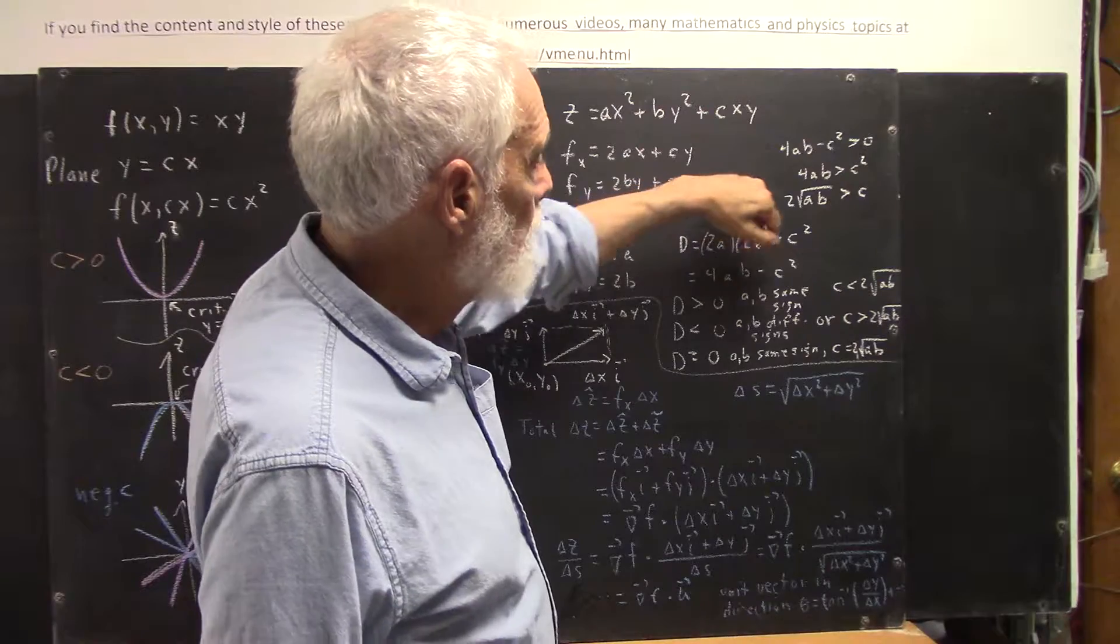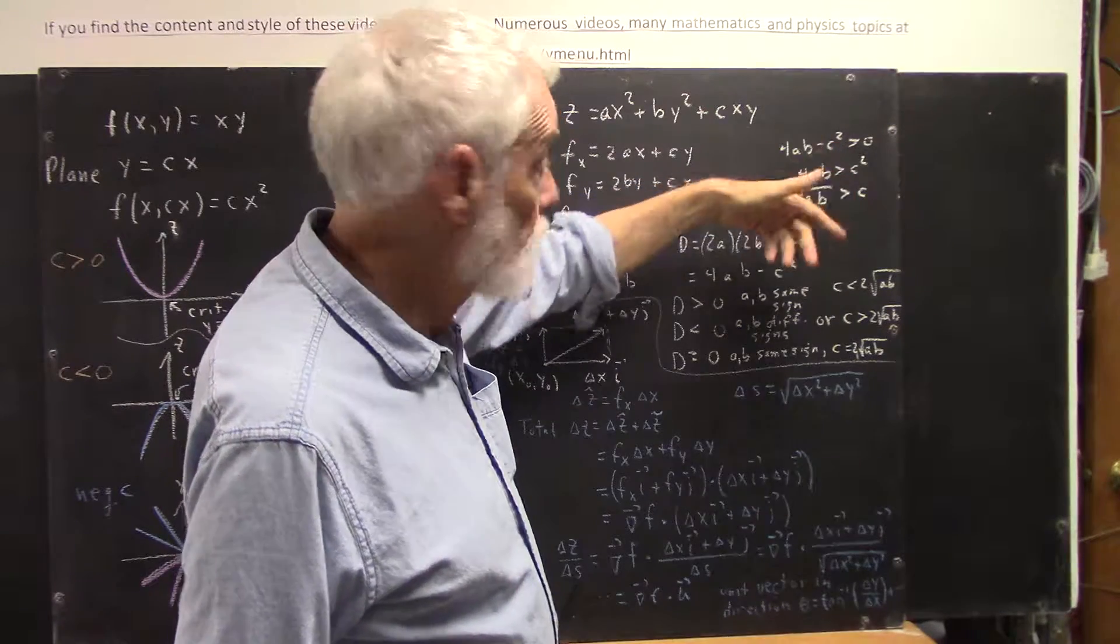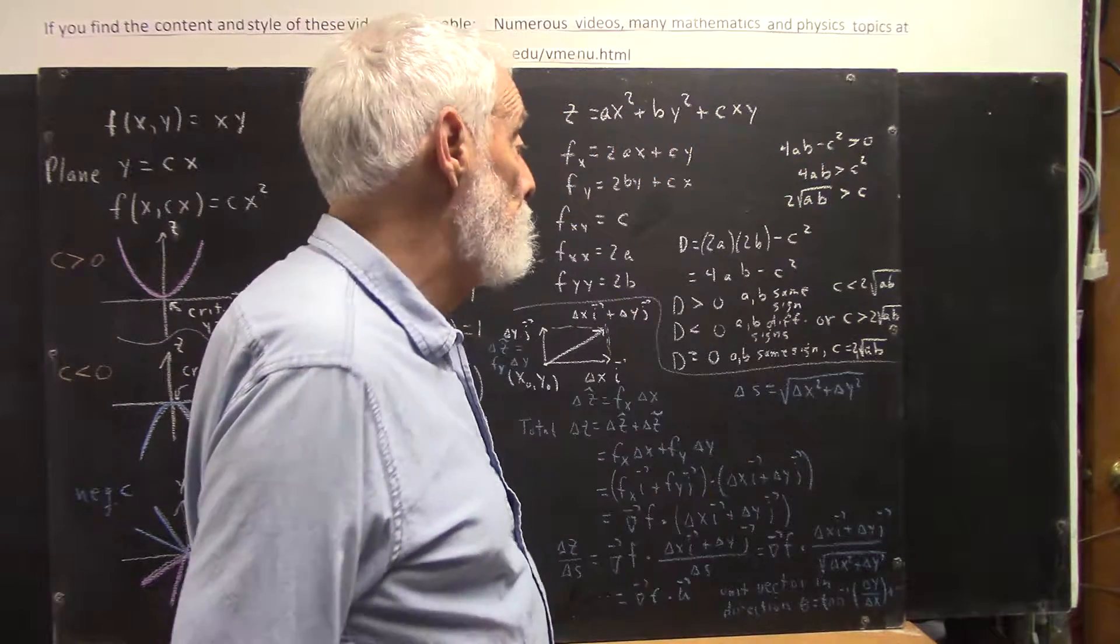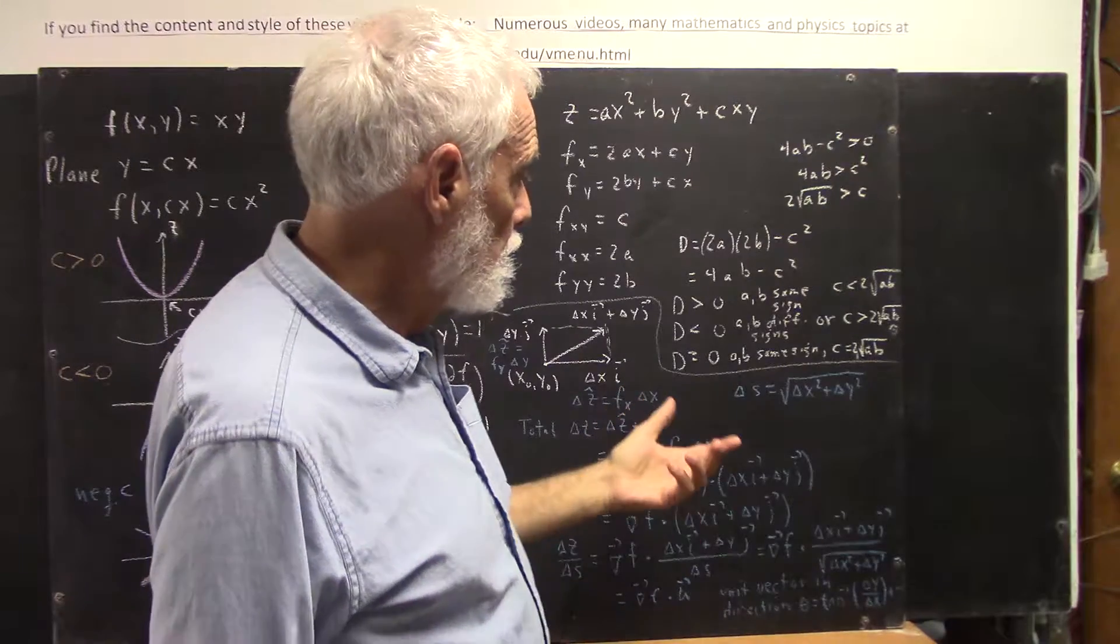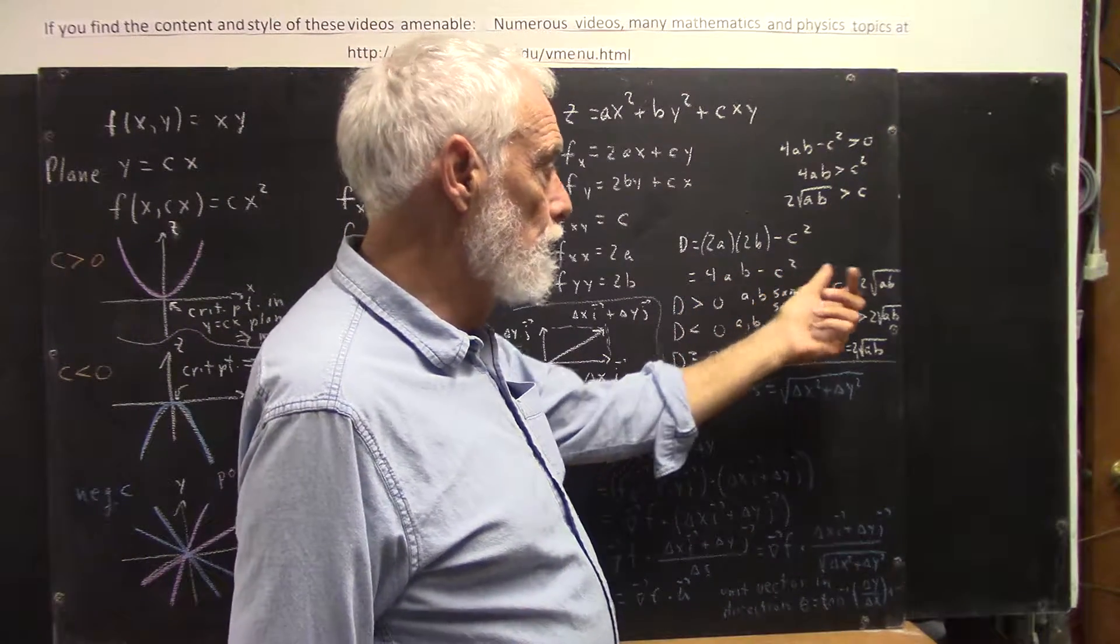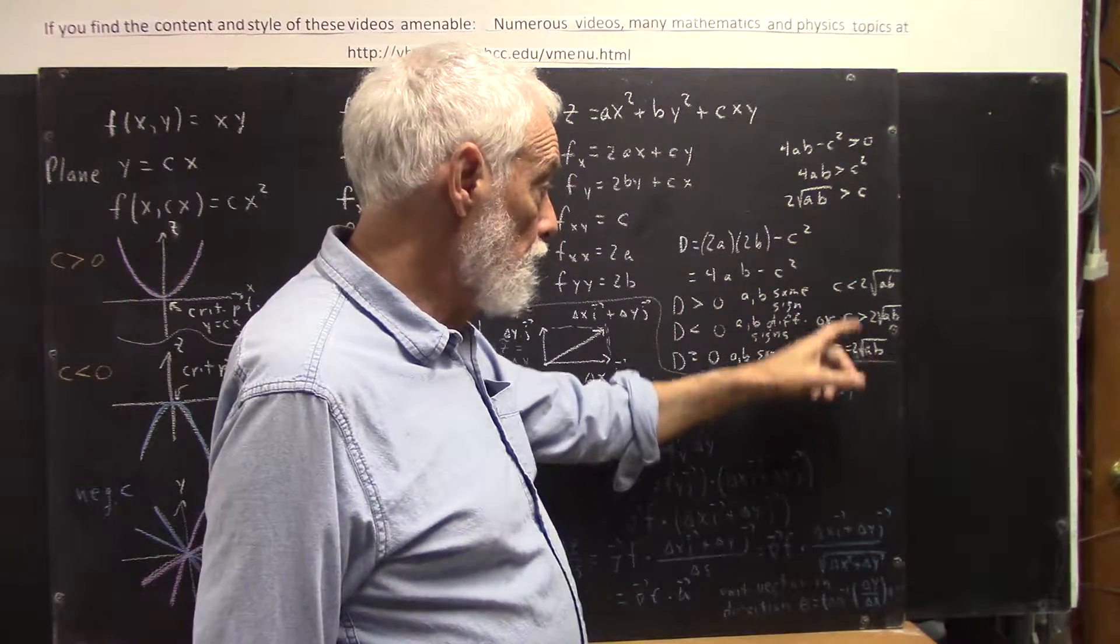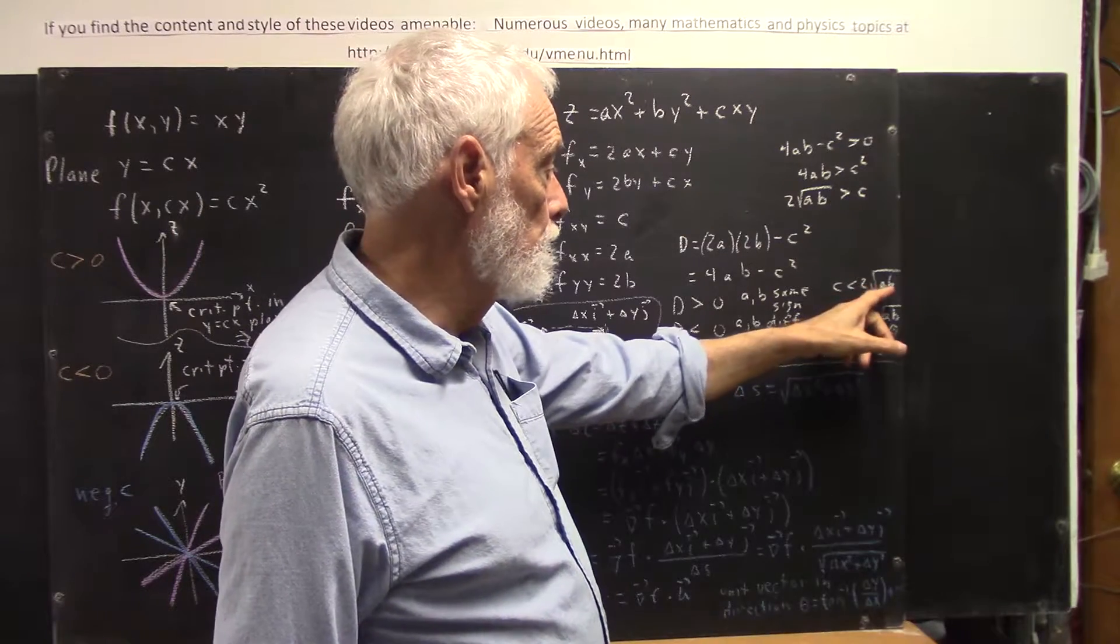Whether 4ab minus c squared is greater than 0 for this function. And that's going to occur. 4ab minus c squared greater than 0, easily solved. We get c less than 2 times the square root of ab.